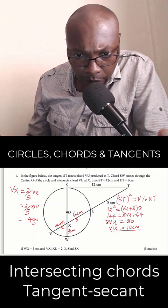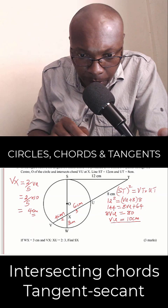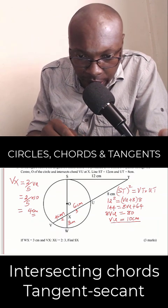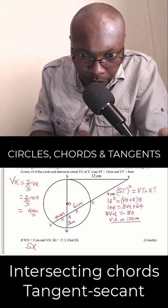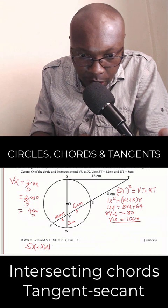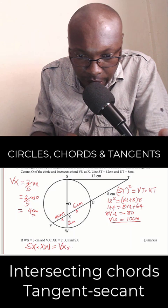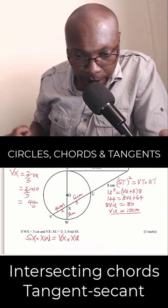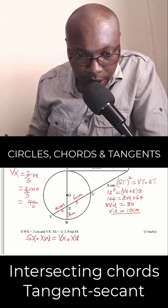After getting that now, we can look at the intersecting chords inside the circle and have that property. So SW and VU are intersecting inside the circle. So the property is here: SX multiplied by XW equals VX multiplied by XU. That is a property of intersecting chords inside the circle.